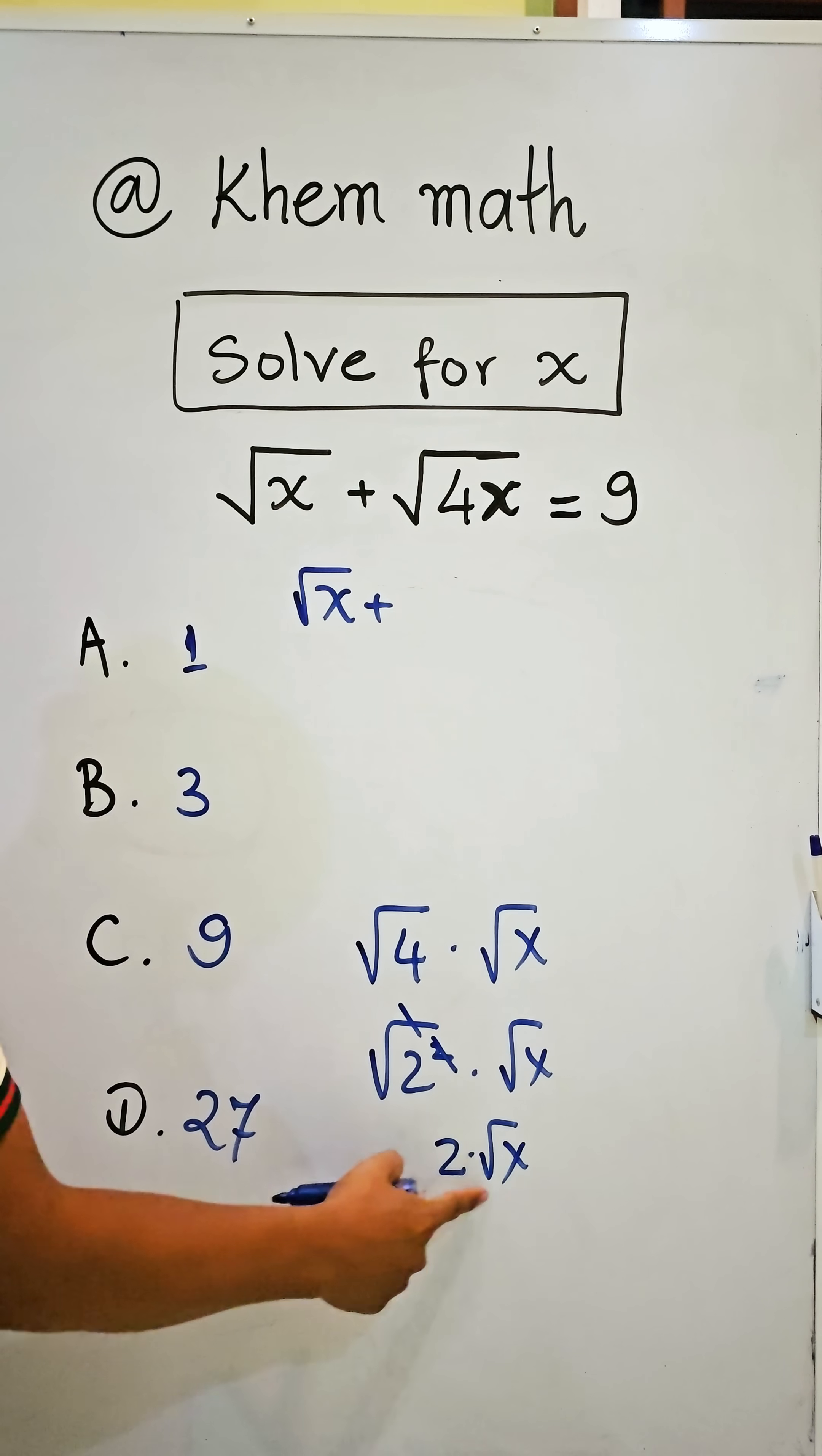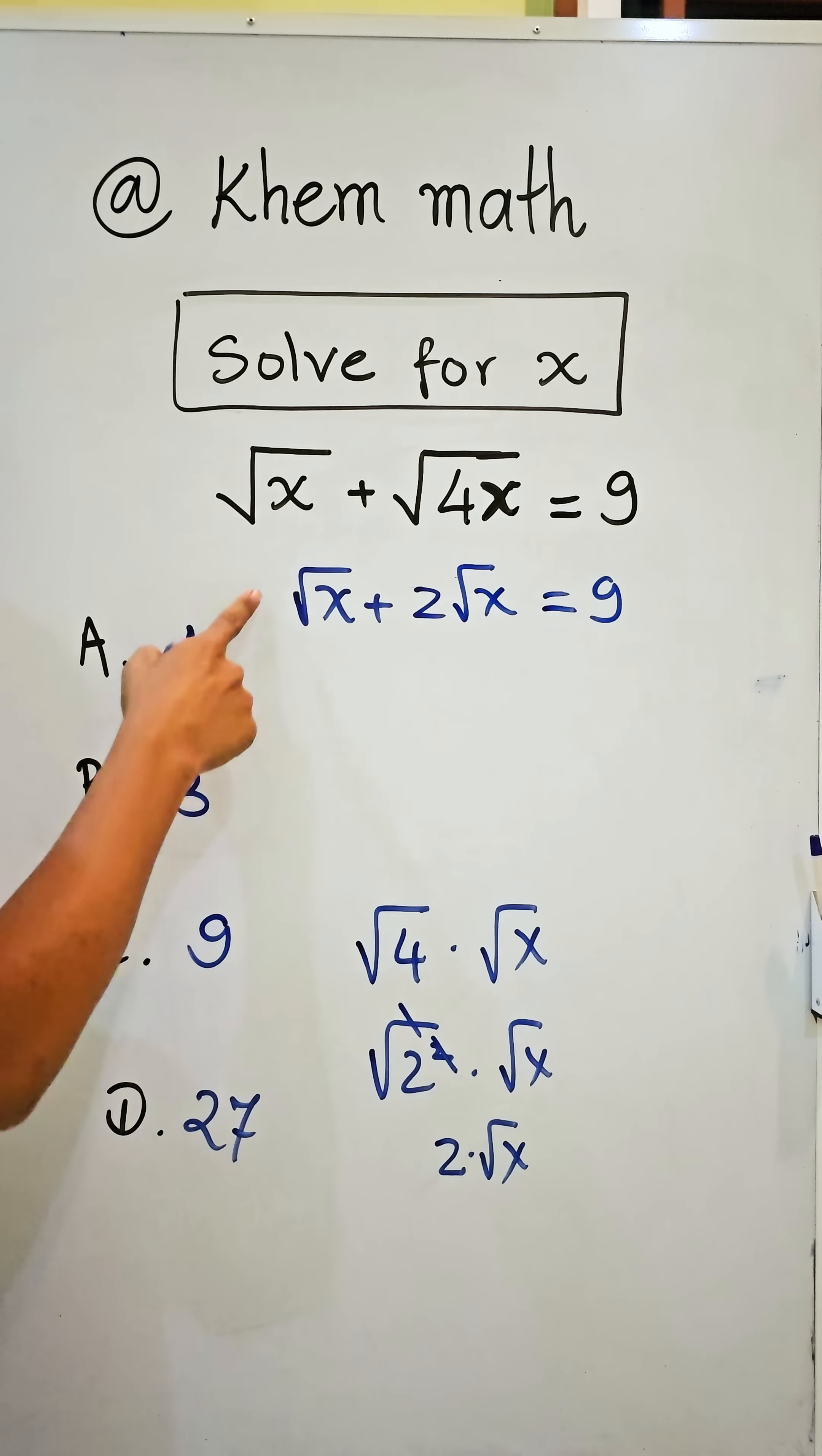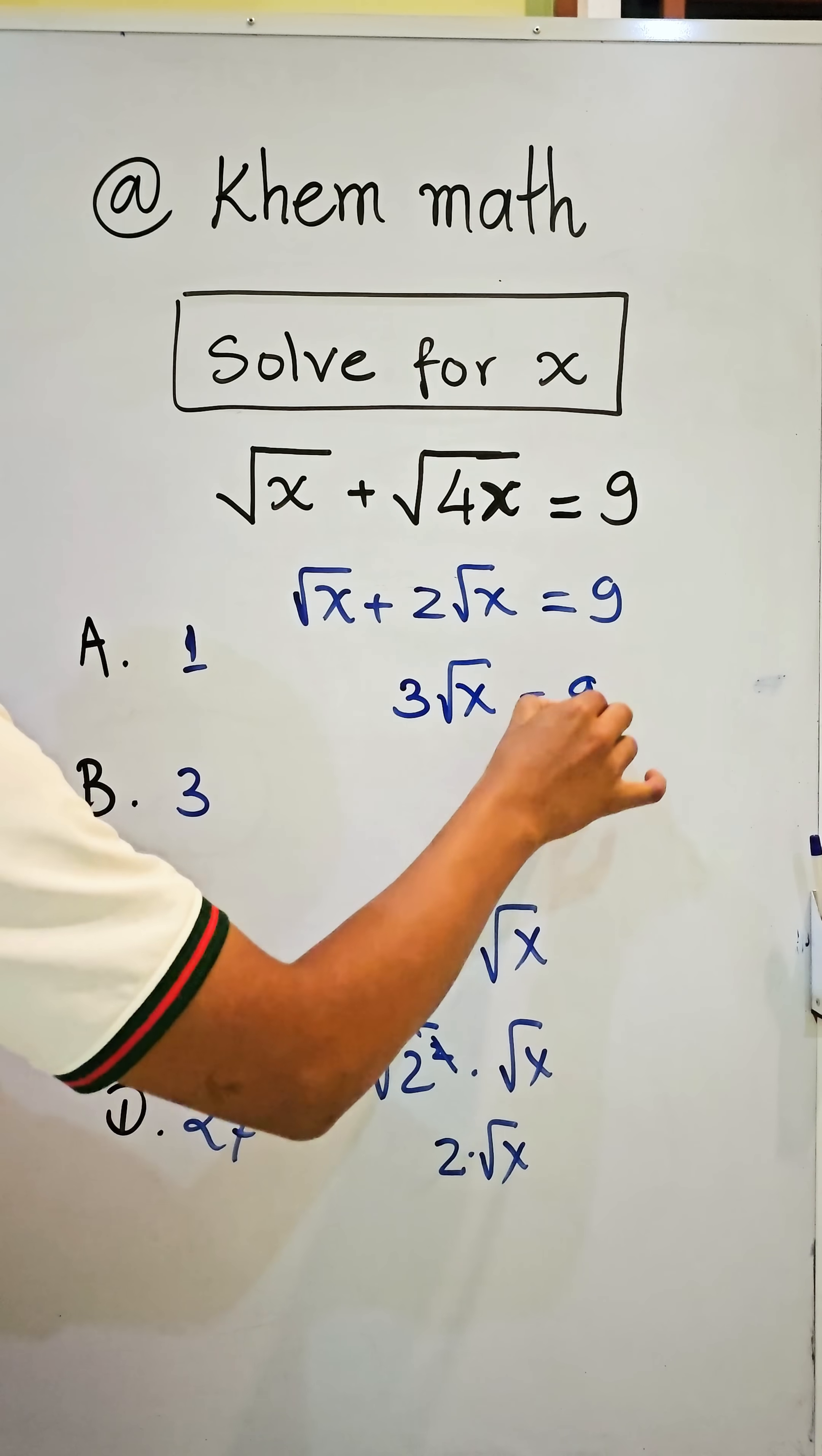So here, I write it 2 square root of x and it equals 9. Here, 1 plus 2 equals 3 square root of x equals 9.